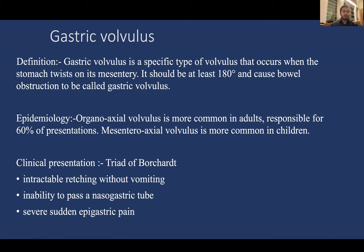Gastric volvulus is a specific type of volvulus that occurs when the stomach twists on its mesentery by at least 180 degrees, causing bowel obstruction. Organoaxial volvulus is more common in adults, responsible for 60% of presentations, while mesenteroaxial volvulus is more common in children. The classic clinical presentation is Borchard's triad: intractable retching without vomiting, inability to pass a nasogastric tube, and sudden severe epigastric pain.